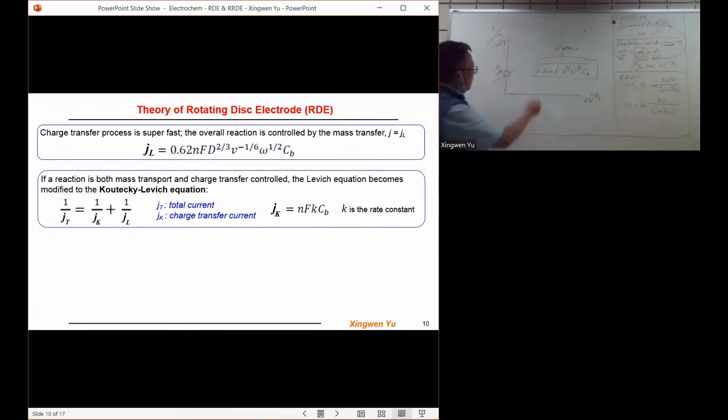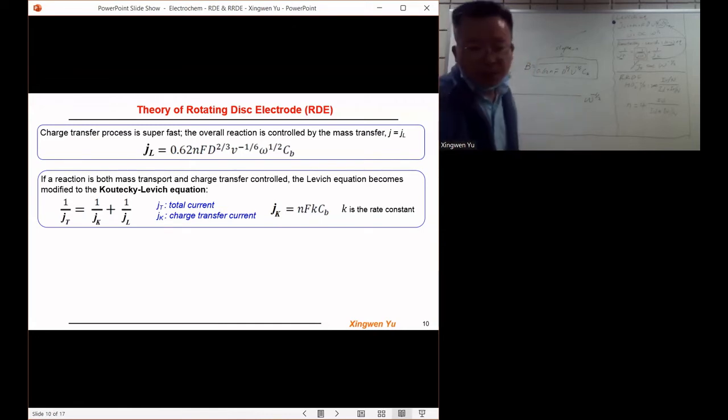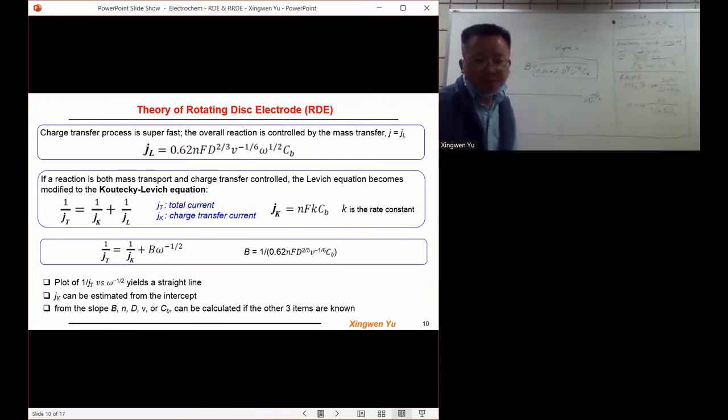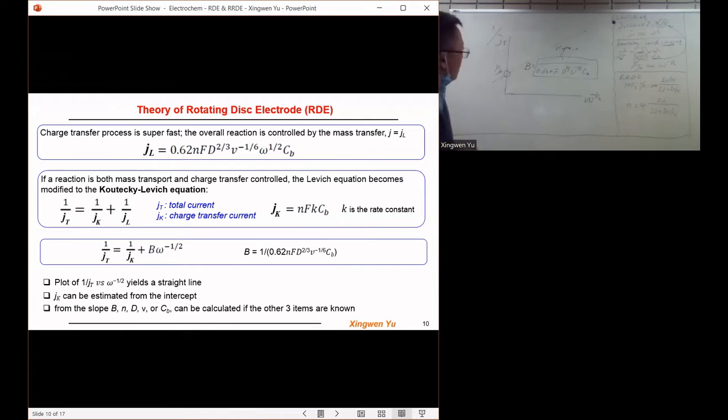So we can eliminate the special term j_k here. The slope will be this, so we can eliminate the special term j_k. In this case, we can just ignore the impact from the charge transfer process and continue to study the electrochemical reaction parameters.